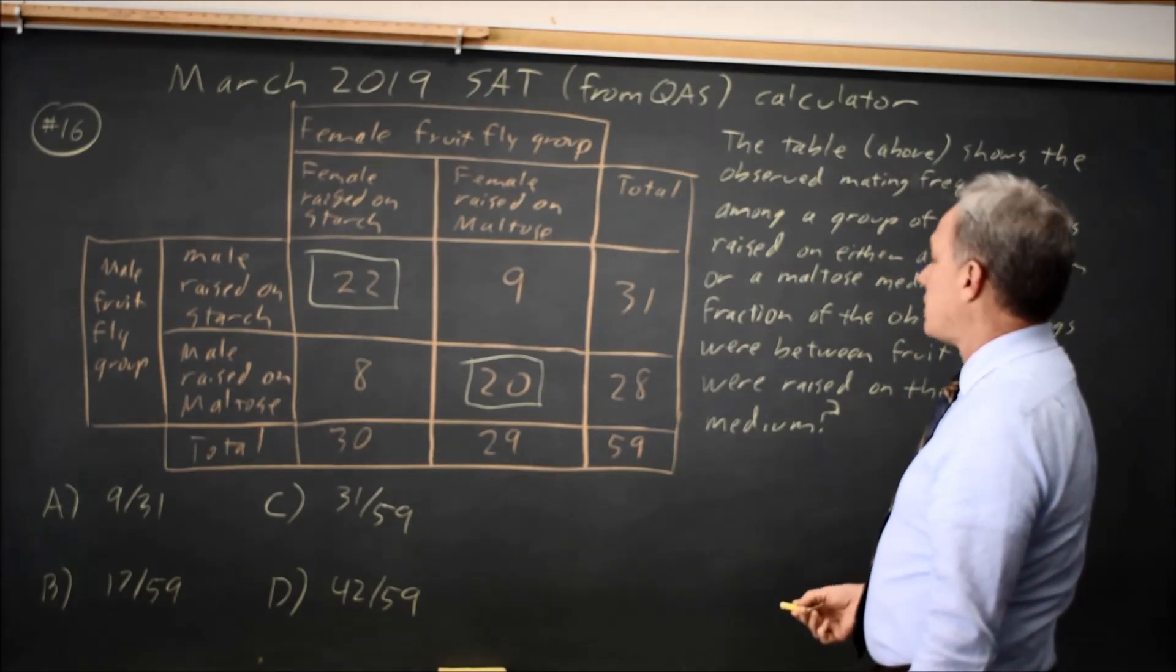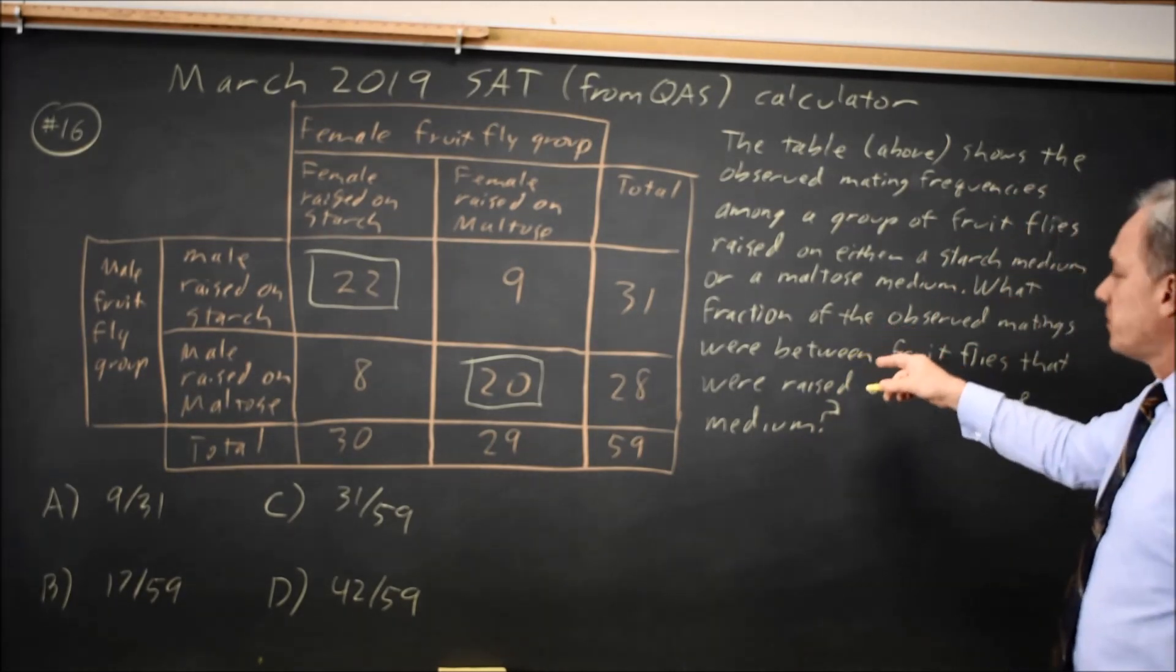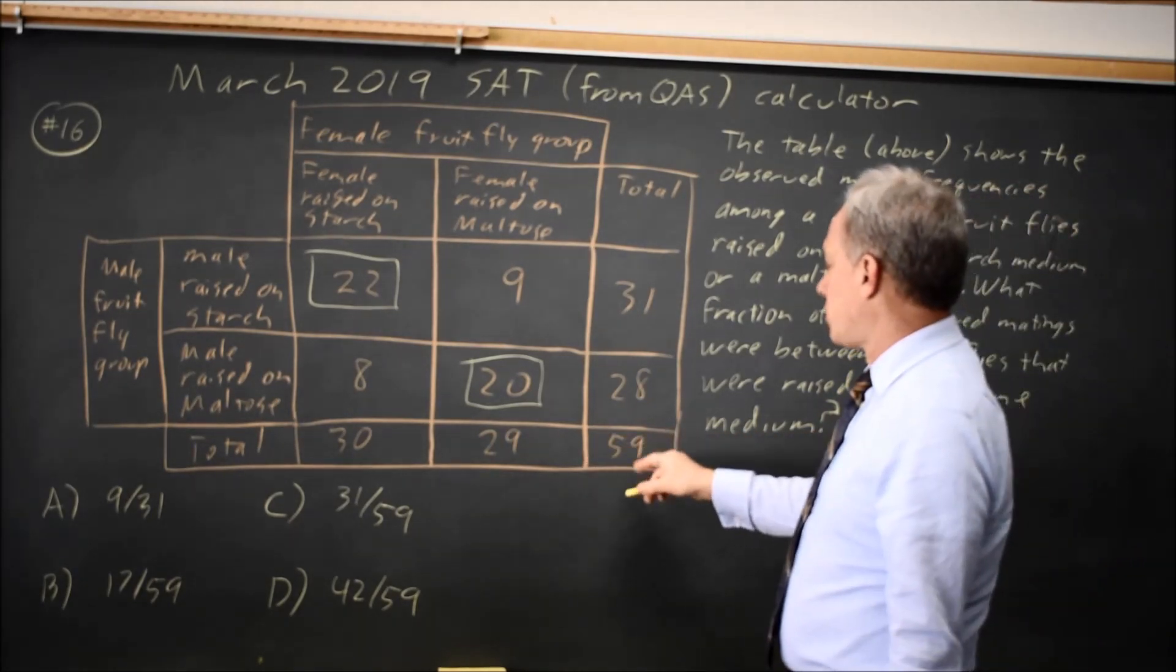So the ones that are raised on the same medium are these 22 plus these 20. And as the fraction of the observed matings, the observed matings is the total 59.